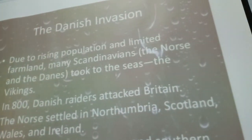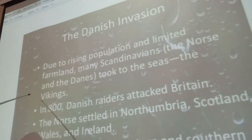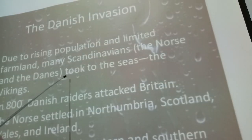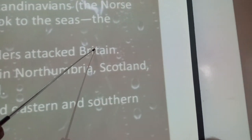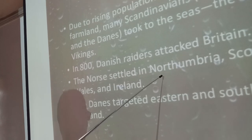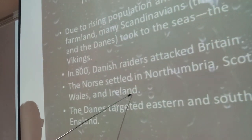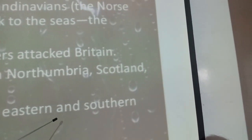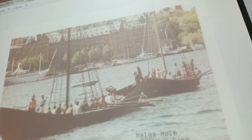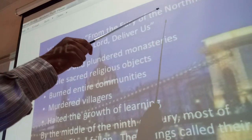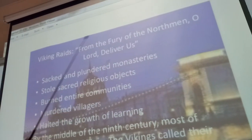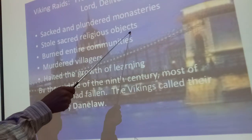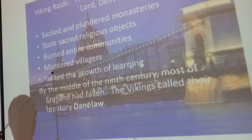The Danish invasion: due to rising population and limited land, many Scandinavians — the Norse and the Danes — took to the seas as Vikings. In 800, Danish raiders attacked Britain. The Norse settled in Northumbria, Scotland, Wales, and Ireland. The Danes targeted Eastern and Southern England. Viking raids sacked and plundered monasteries, stole sacred religious objects, burnt entire communities, and murdered villagers.